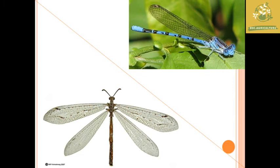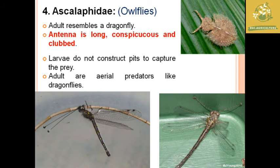The fourth family is Ascalaphidae, the owlflies. Like the antlion adults, the owlfly also resembles a dragonfly. The antenna is long, conspicuous, and club-shaped. The antlion line is distinct. Owlflies are aerial predators.